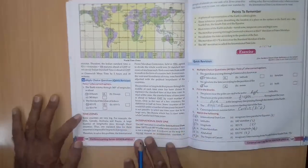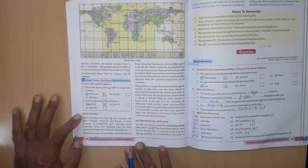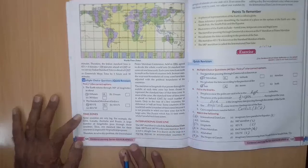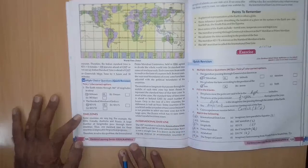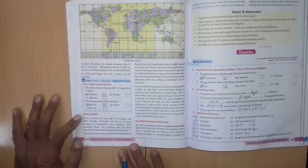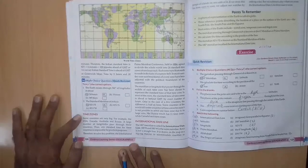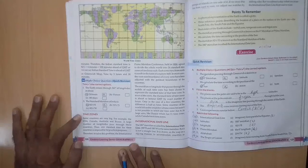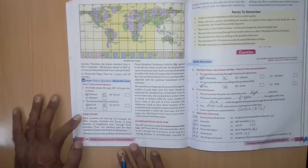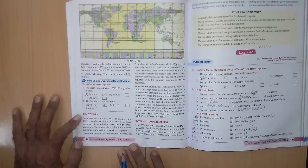Page number 120. Tick the correct options. First, the earth rotates through 360 degree of longitudes in about dash A 24 hours, B 5 hours, C 365 days. Right answer is A 24 hours.